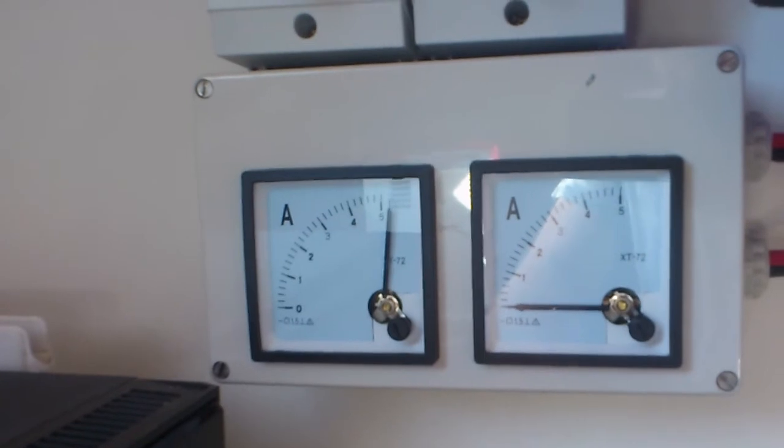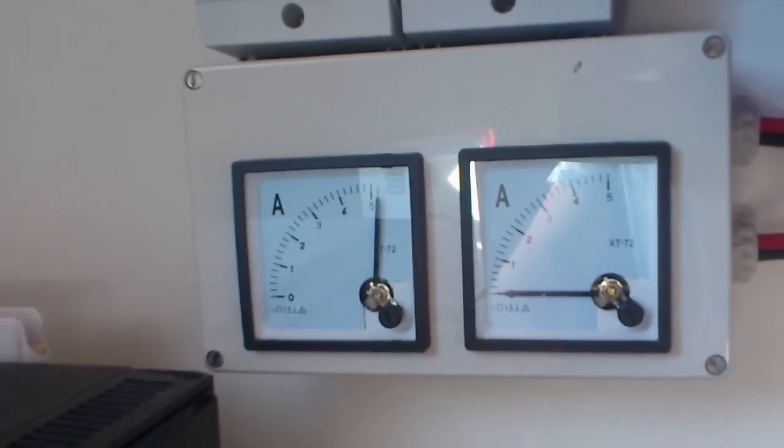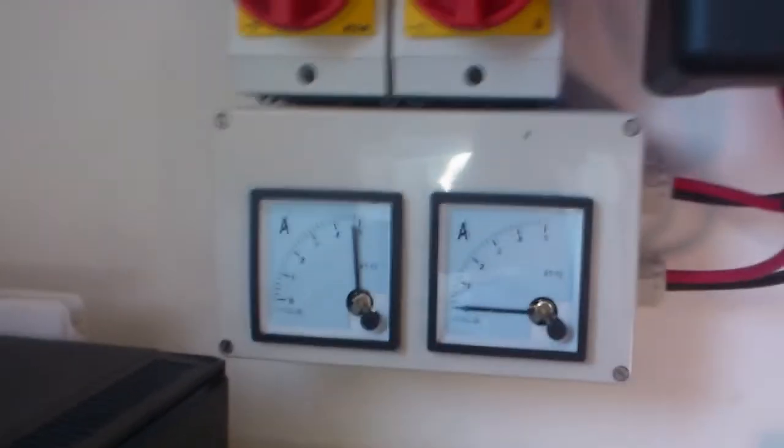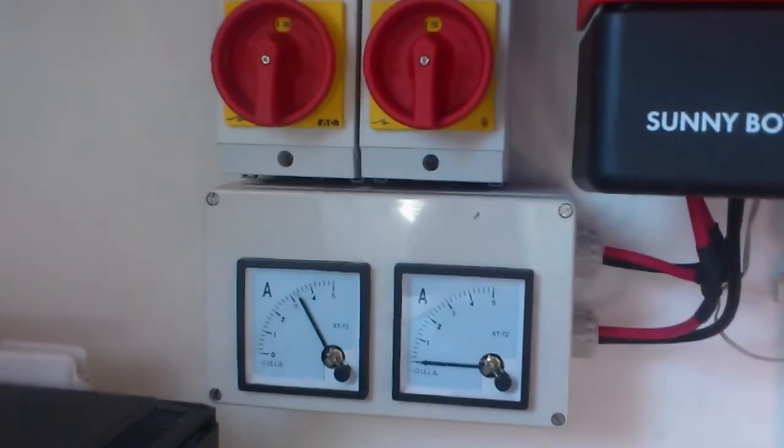So the voltage remains mostly steady and the current is the differing factor here which decides how much power you are producing. So this is a nice introduction to using analog dials on your PV strings.